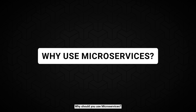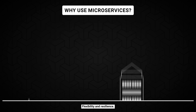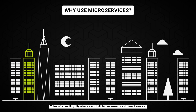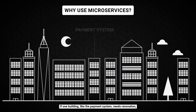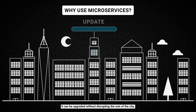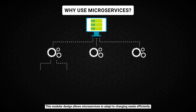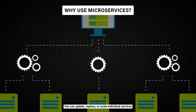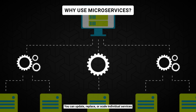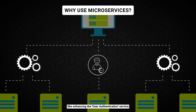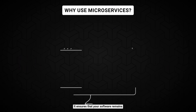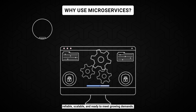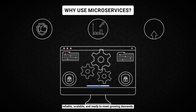Why should you use microservices? Flexibility and resilience. Think of a bustling city where each building represents a different service. If one building, like the payment system, needs renovation, it can be upgraded without disrupting the rest of the city. This modular design allows microservices to adapt to changing needs efficiently. You can update, replace, or scale individual services — like enhancing the user authentication service — without impacting others. It ensures that your software remains reliable, scalable, and ready to meet growing demands.